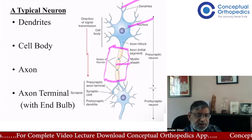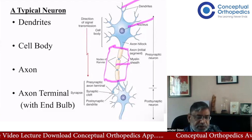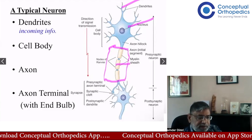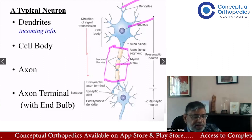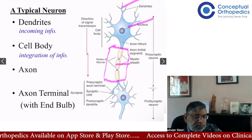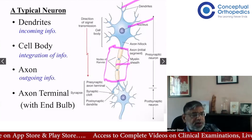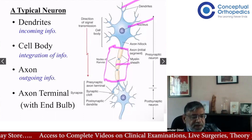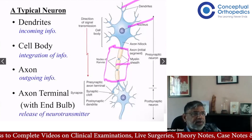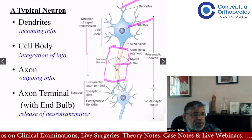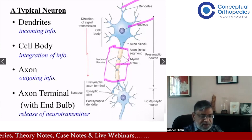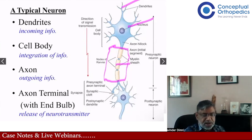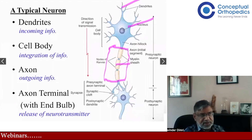Dendrites receive incoming information, the cell body integrates this information, and the axon transmits it. The main role of axons and peripheral nerves is to transmit impulses from the cell body distally — this is called orthodromic transmission. If the impulse travels the other way, it is called antidromic. In nature, most transmission is orthodromic. You may be asked to draw a neuron or a peripheral nerve, so remember what needs to be included.